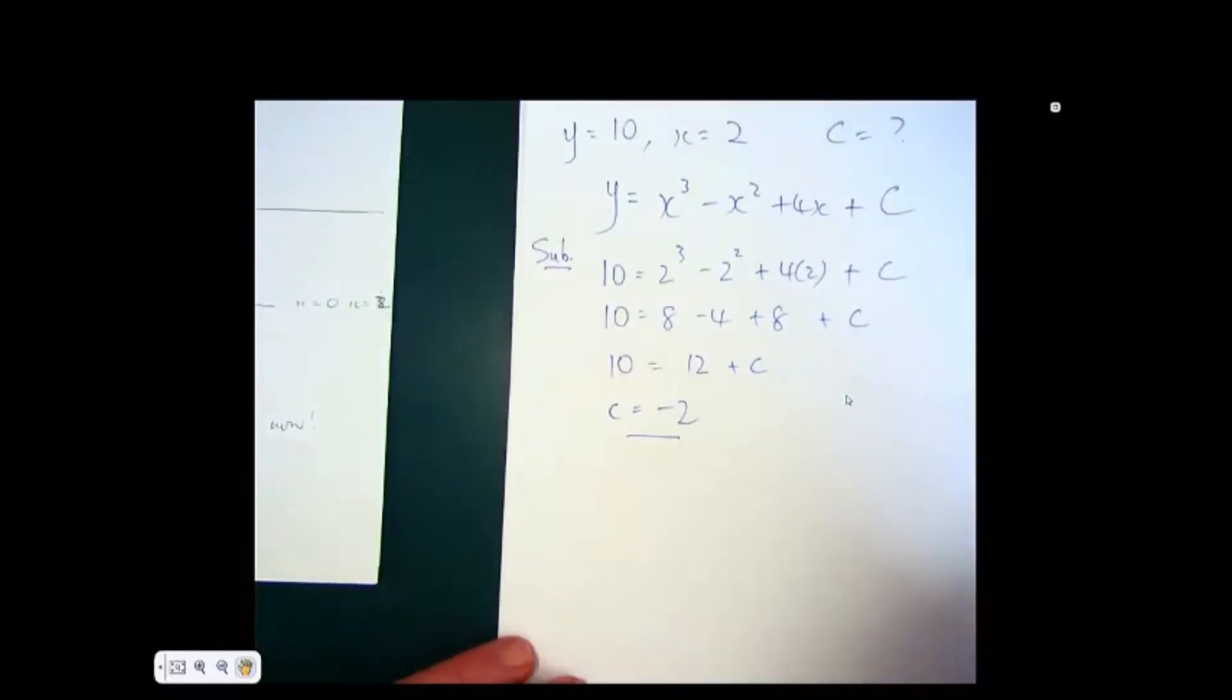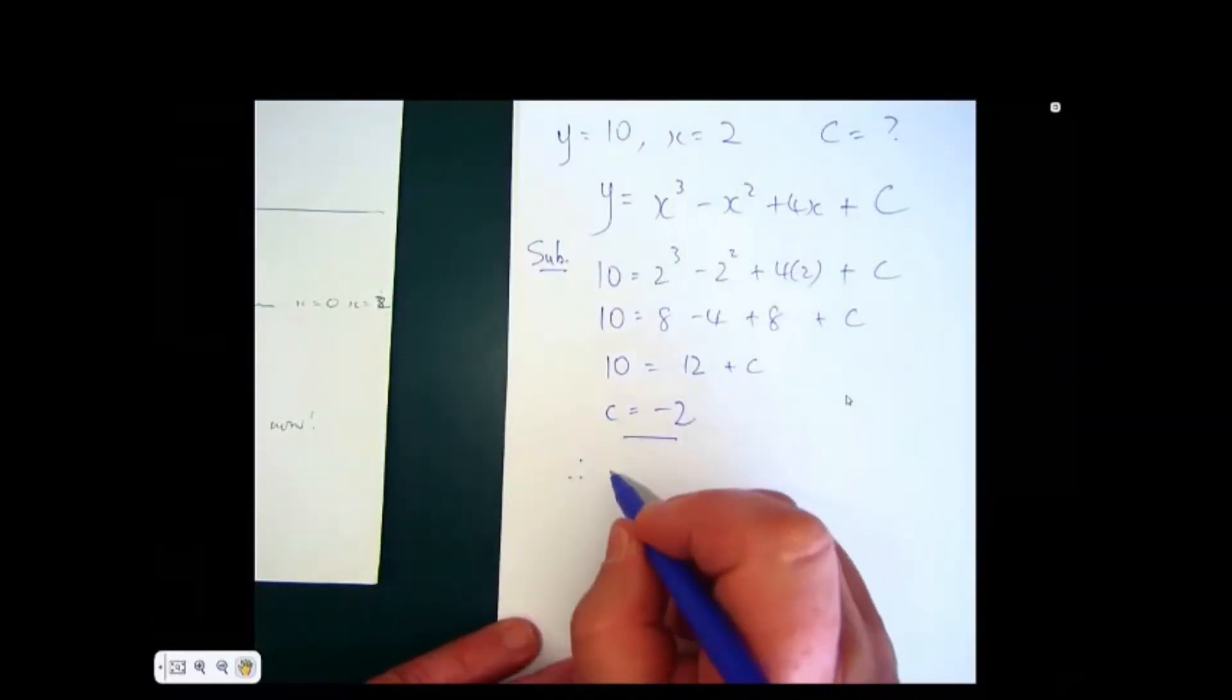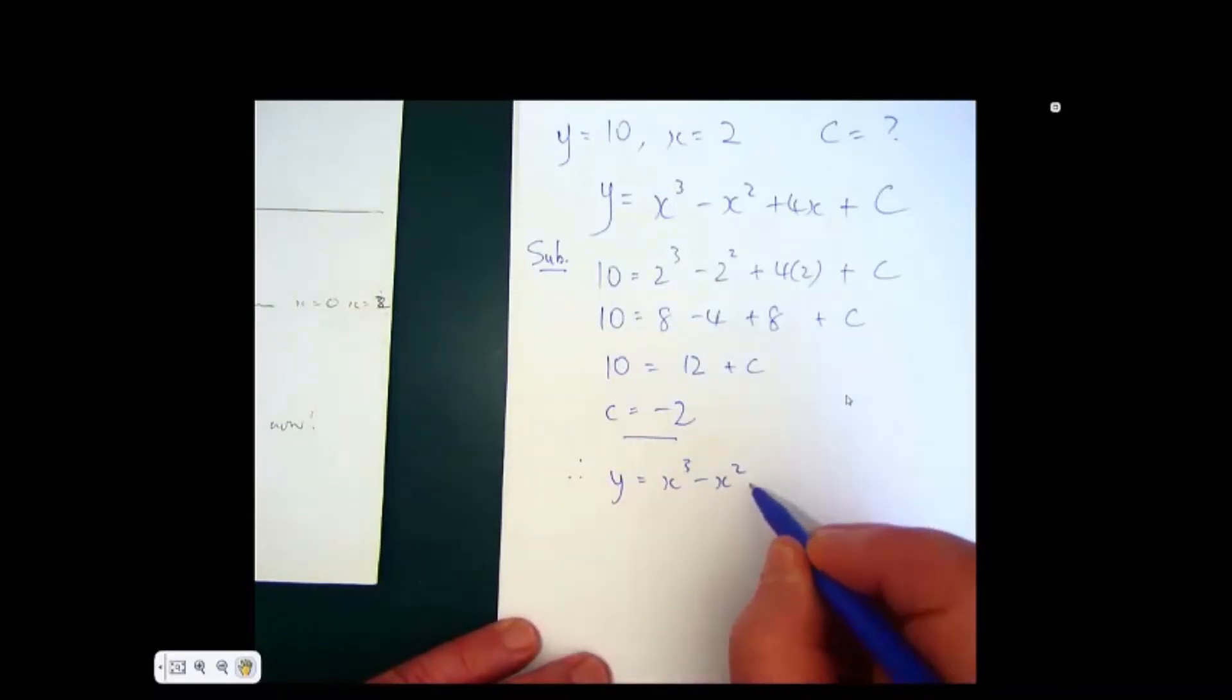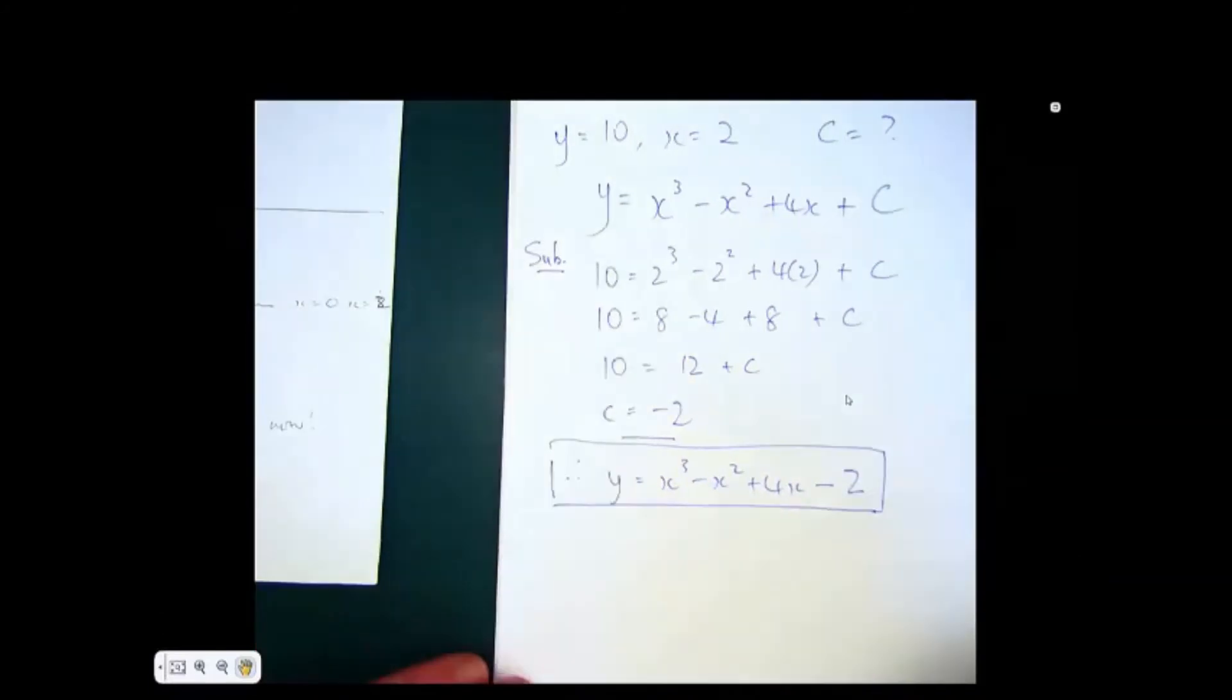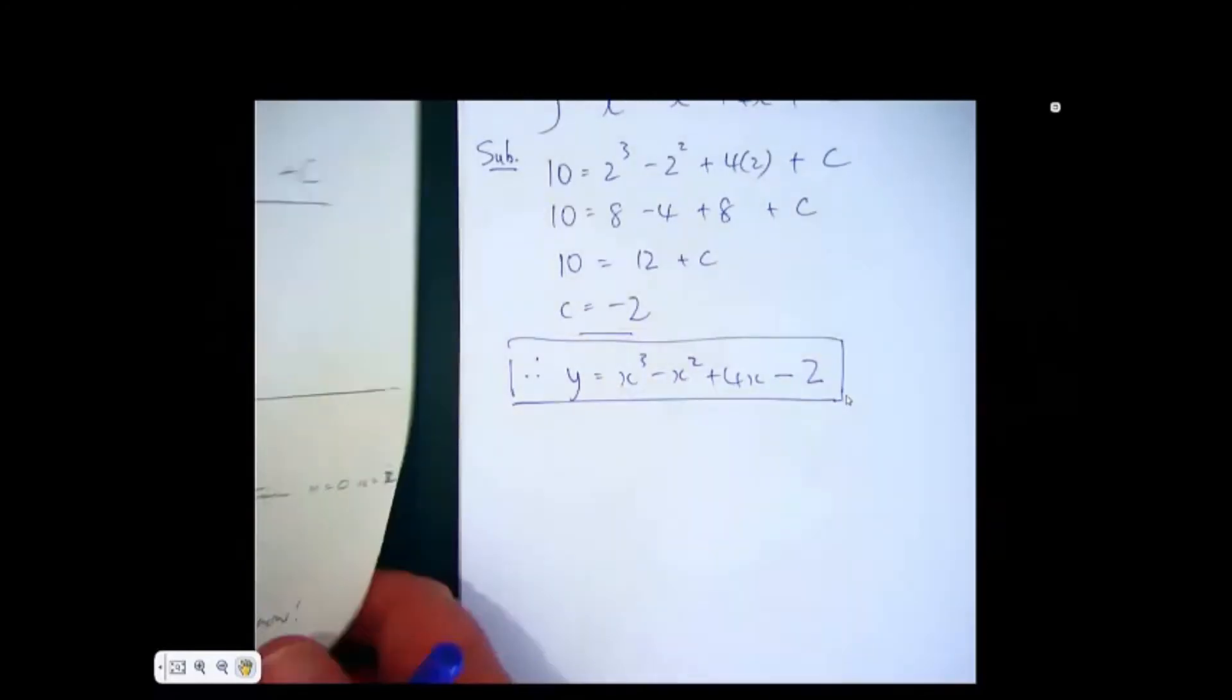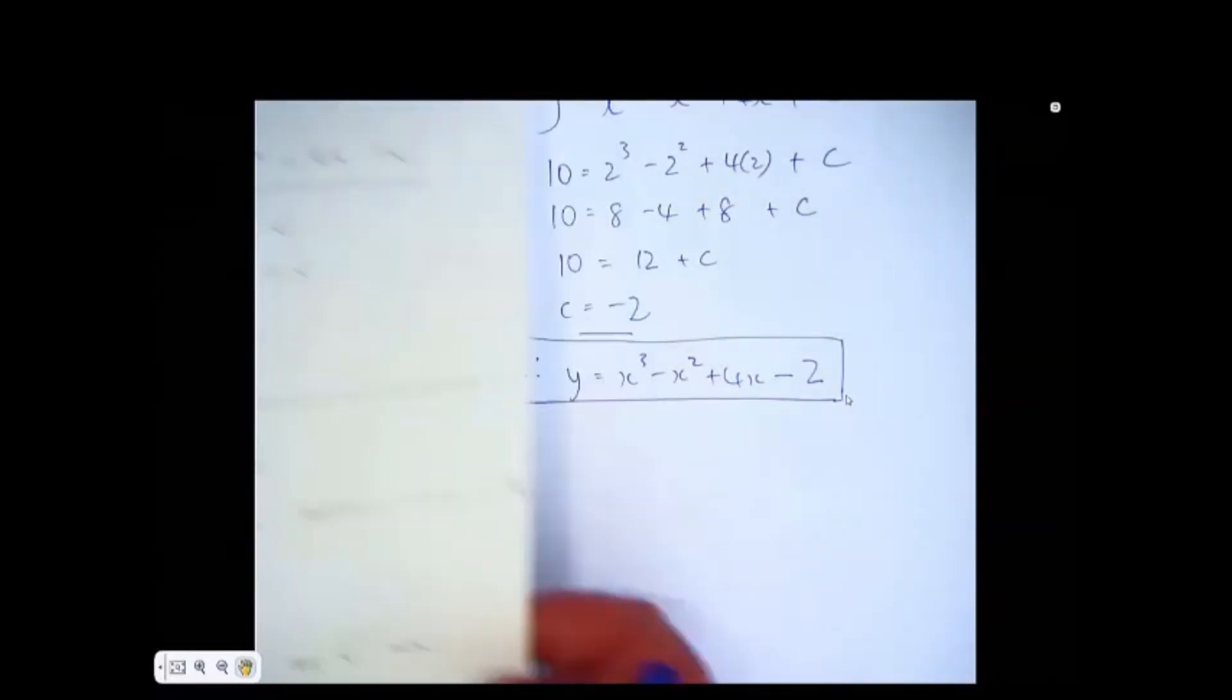So if that's the case, your final answer now is therefore y equals x cubed minus x squared plus 4x minus 2. You see, this is the unique equation that fits this data that the examiner has given us. So that's one that is very common and we have to deal with that a good deal.